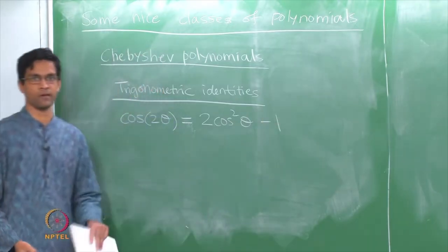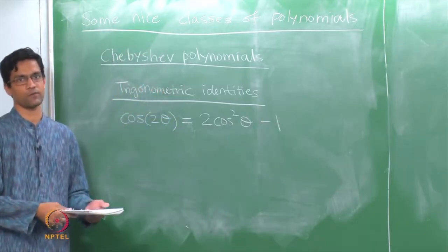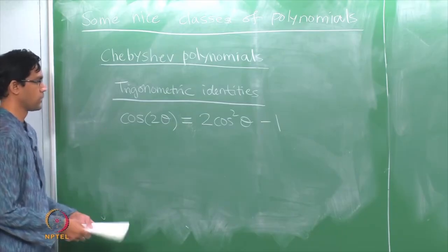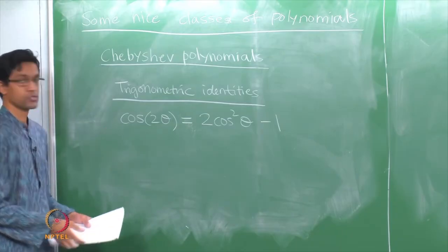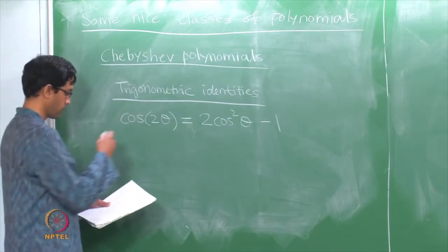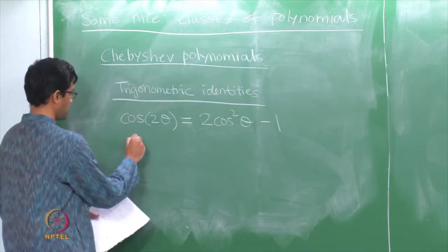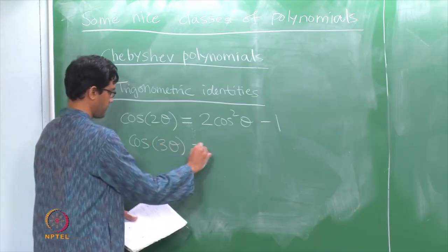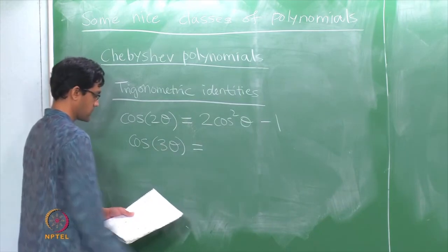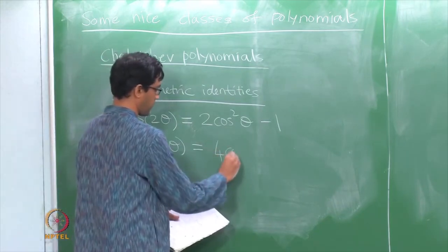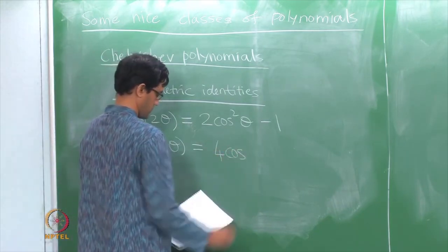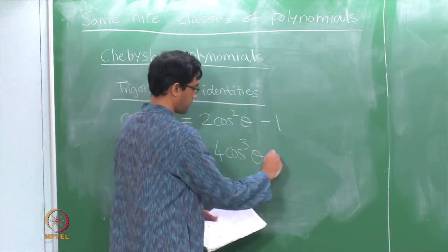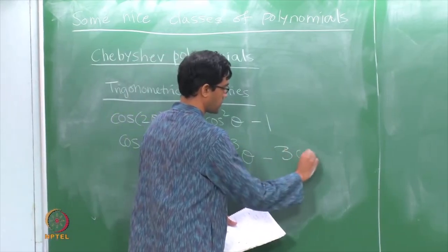Here is one of them — the double angle formulas. If you are trying to find cosine of 2 theta, the well known formula for it is 2 cos squared theta minus 1. Now of course there is more — if you try to find cosine of 3 theta, where theta is some angle, this is again a rather well known formula: 4 cos cubed theta minus 3 cos theta.